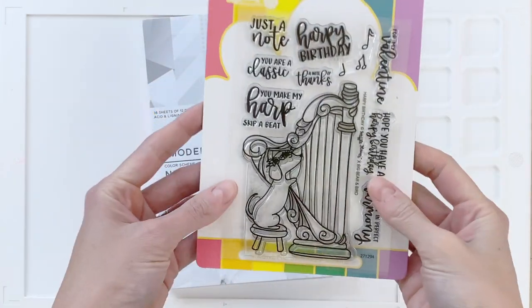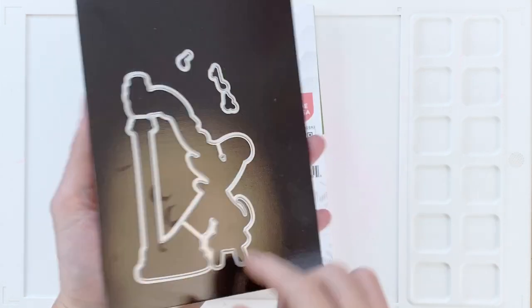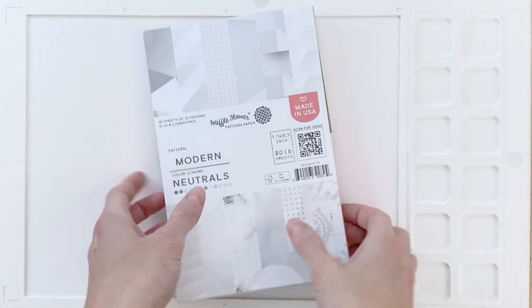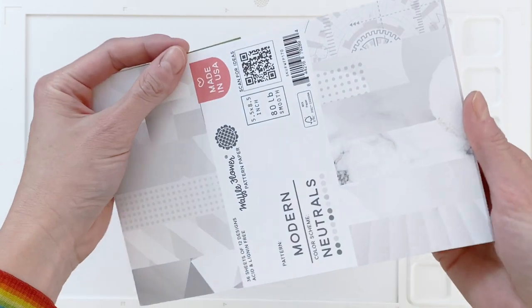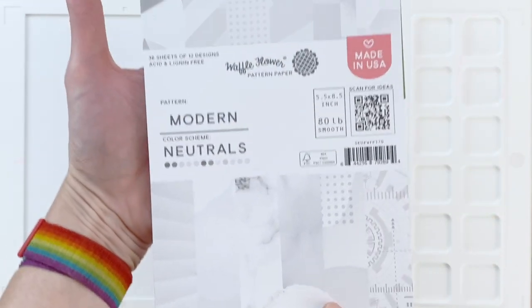To create today's card I'm going to be using the Harpy Birthday combo set which comes with the stamp set and the matching die in the back. I'll also be using this new Modern Neutrals paper pad.